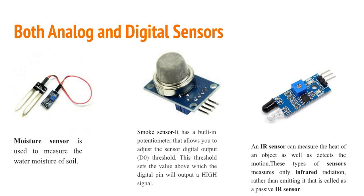The IR sensor can detect the heat of an object and motion. So there are many sensors available — you can select according to your needs and requirements and see which task you have to perform. There are many sensors available like temperature sensor, humidity sensor, PIR, IR sensor, smoke sensor, and gas sensor.